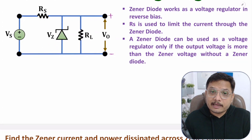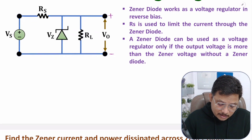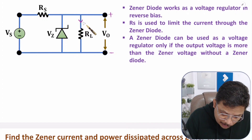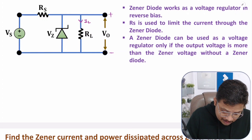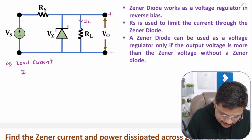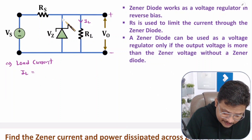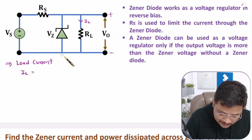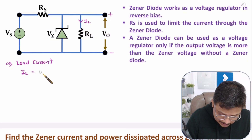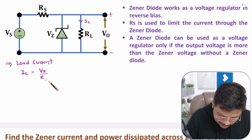Now I will derive a few essential parameters. To calculate current passing through the load, which is IL, load current can be calculated as: IL equals Vz divided by resistance RL, where Vz is the voltage across the Zener.